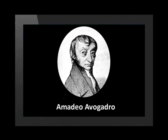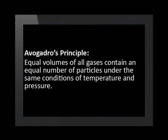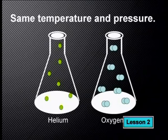He hypothesized that equal volumes of all gases at the same temperature and pressure have the same number of molecules. Avogadro's Principle states that equal volumes of all gases contain an equal number of particles under the same conditions of temperature and pressure. This rule is true for all gases. If you consider a gas cylinder filled with helium gas and a gas cylinder filled with oxygen gas, by applying Avogadro's Principle, we can say that if these gases are at the same pressure and temperature, there will be the same number of gas particles in each cylinder. So, for gases, it would really be useful if we could find a specific volume of gas that represents one mole.